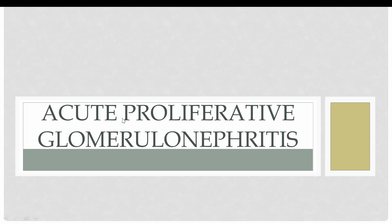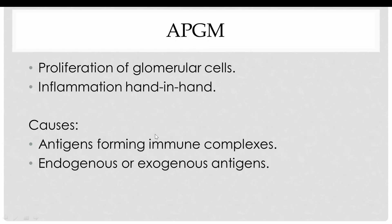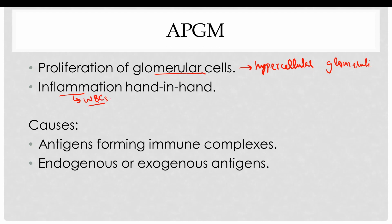The first disease we will discuss in the nephritic syndrome is acute proliferative glomerulonephritis. As the name shows, there is proliferation of the glomerular cells, which typically appear as hypercellular glomeruli under the microscope, and there is inflammation due to the recruitment of white blood cells in the glomeruli.